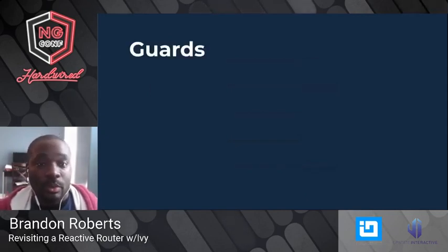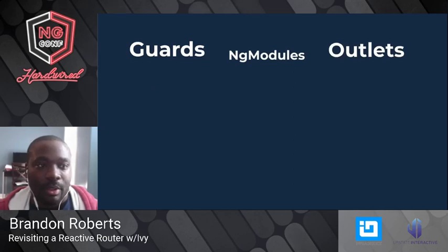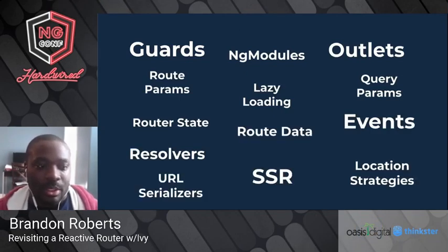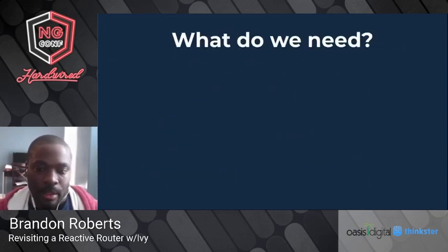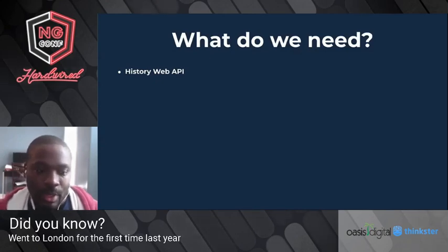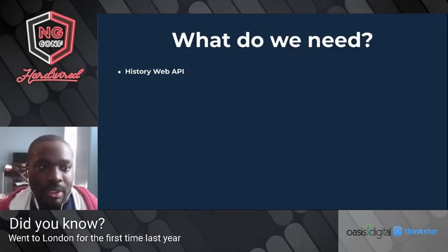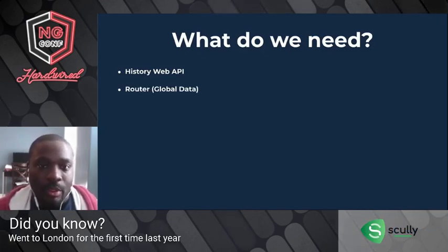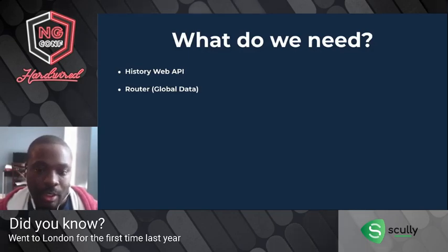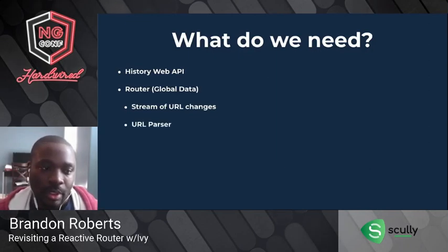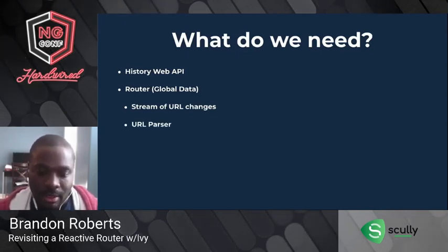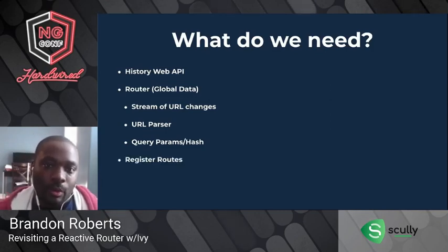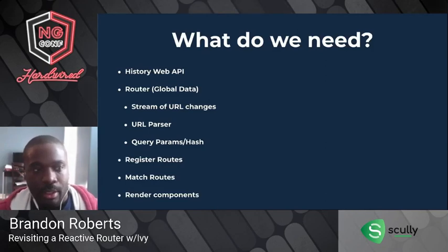With the current Angular router, there are many things to consider if we want to build a router that's reactive, but we'll keep this scope to a few things for this talk. We need a way to interact with the History Web API, which drives single-page apps — browser APIs to control the history stack. We need the router to contain global information including a stream of URL changes. We need something to parse the URL into a structure we can digest, including query params or the hash. And we need a way to register routes, route matching, and rendering of components.